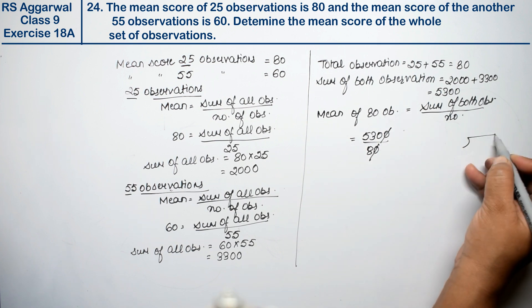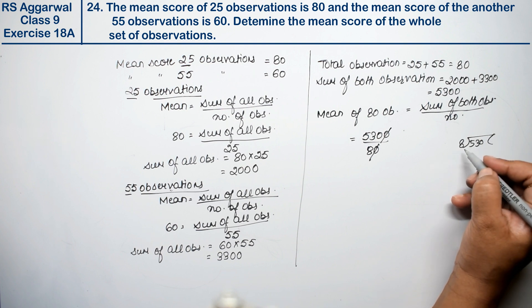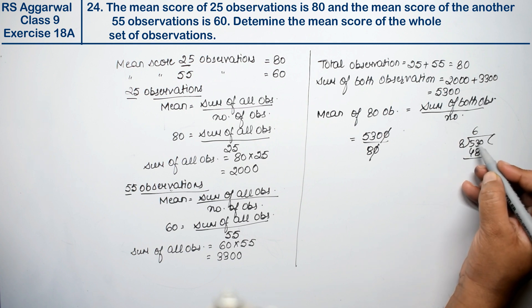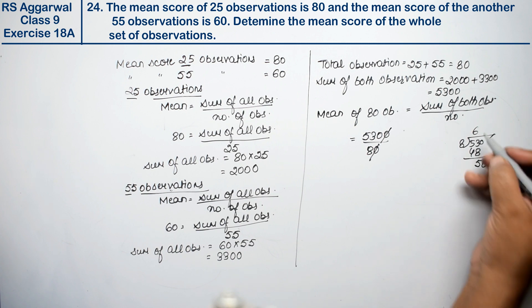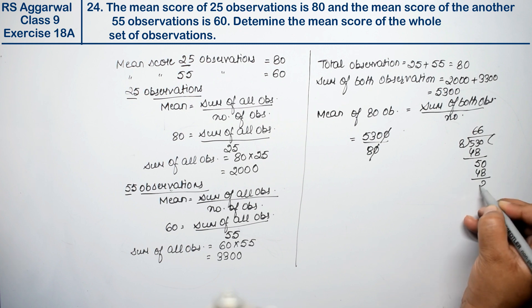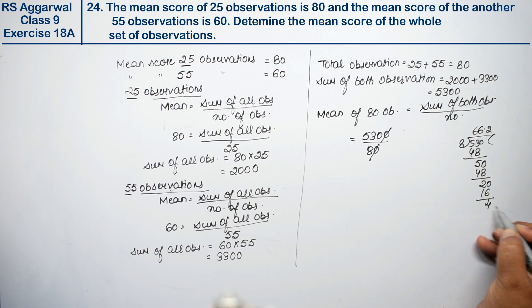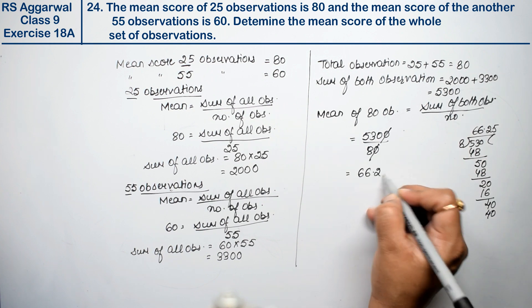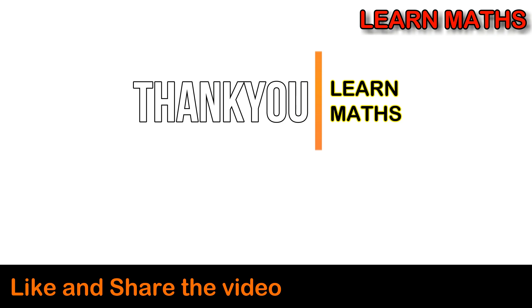Sum is 5300 and number of observations is 80. So we divide 5300 by 80 — the zero cancels, giving us 530 divided by 8. Working through the division: 8 sixes are 48, 8 sevens are 56 — we get 66.25. So 66.25 is the answer.